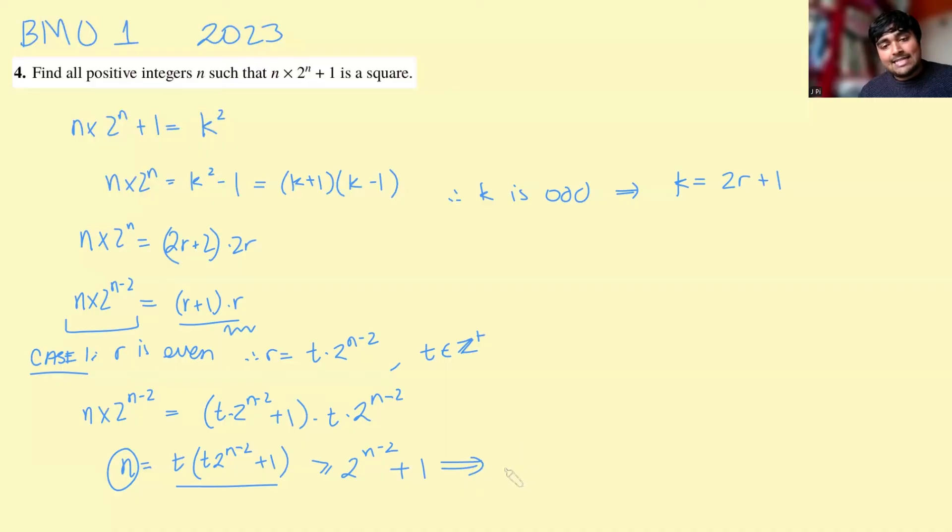But anyway, this here implies that n must be 1, 2, or 3. In fact, not 1, as I said, because you get 1 and then 1 and a half here. So n must be 2 or 3 for this to work. And you can actually just check both those values of n here. If you plug them back in, 2 times 2 squared plus 1 is 9, which is a square number. If we plug in 3, we get 3 times 2 to the 3 plus 1. So that's 3 times 8. 24 plus 1 is 25. So that works as well.